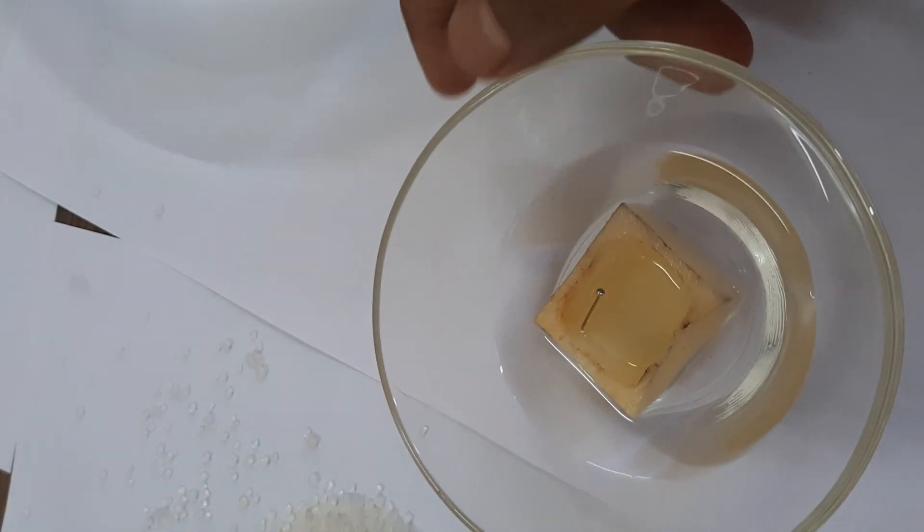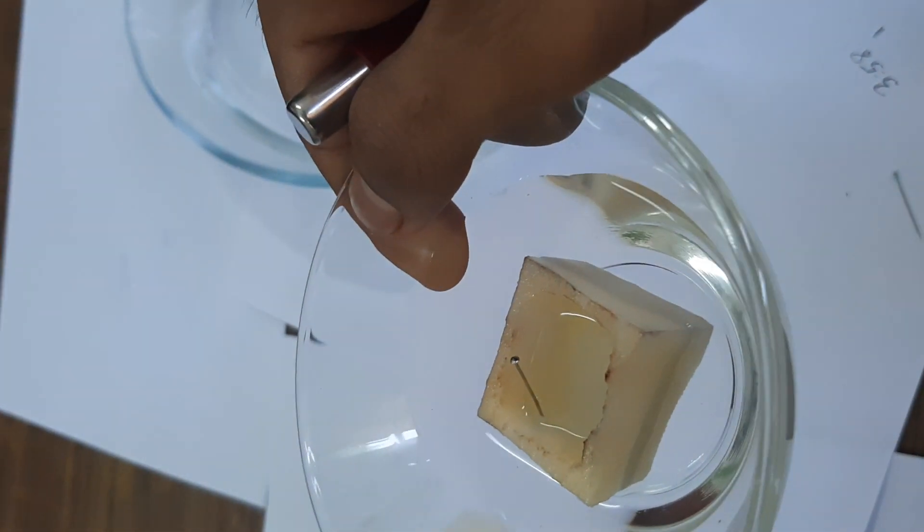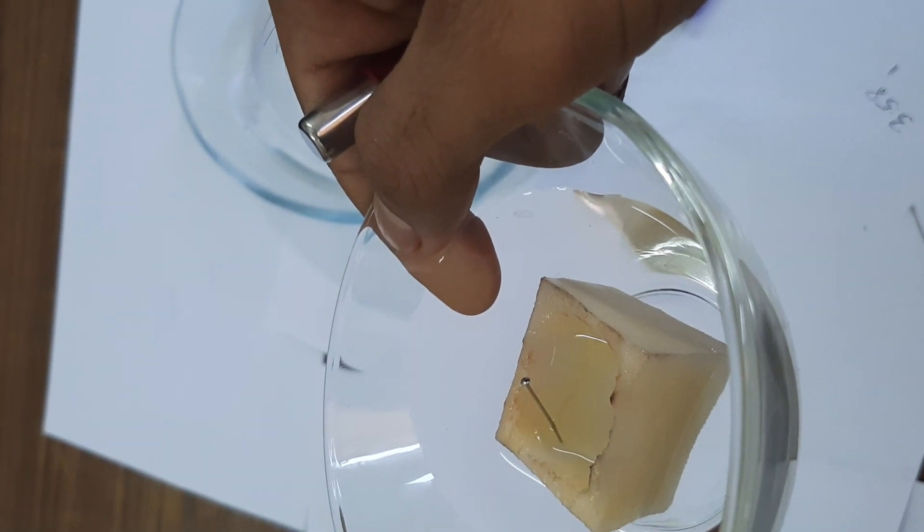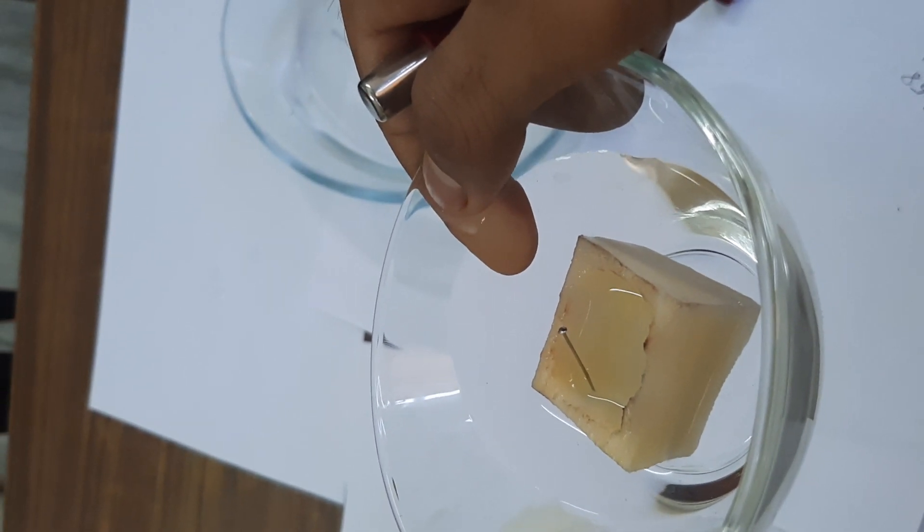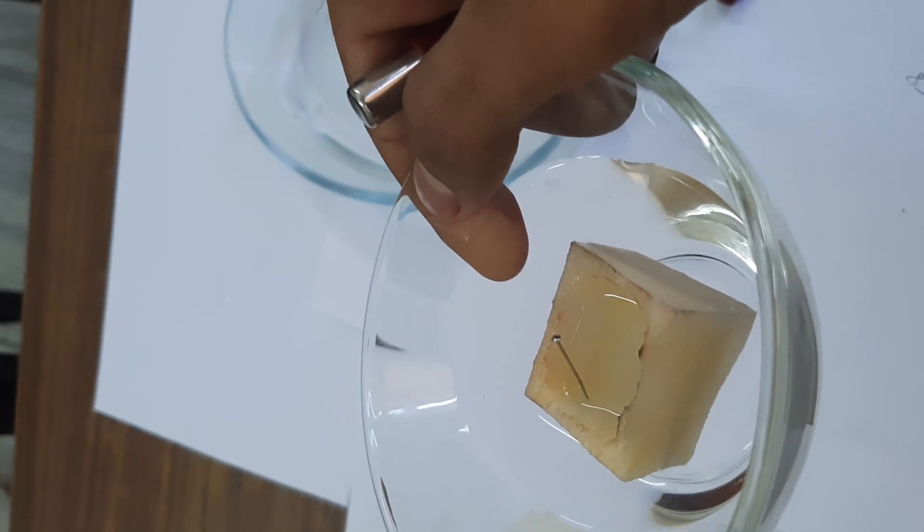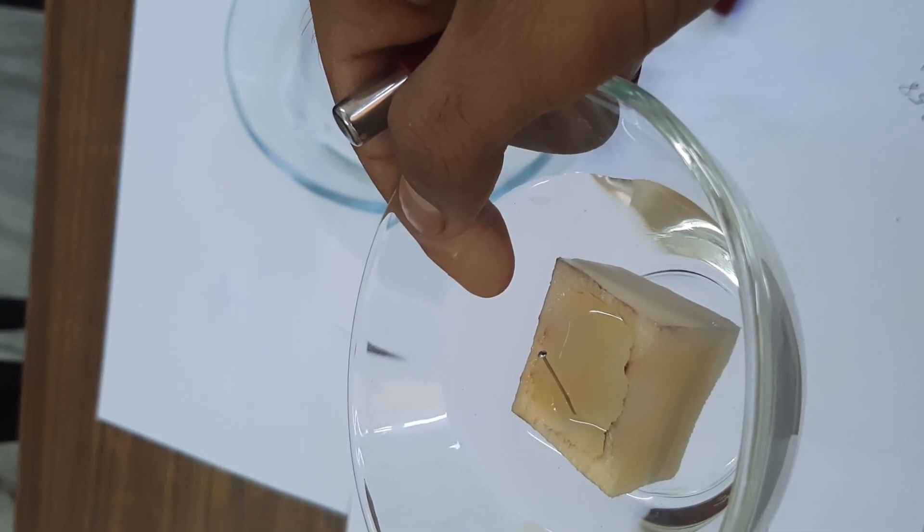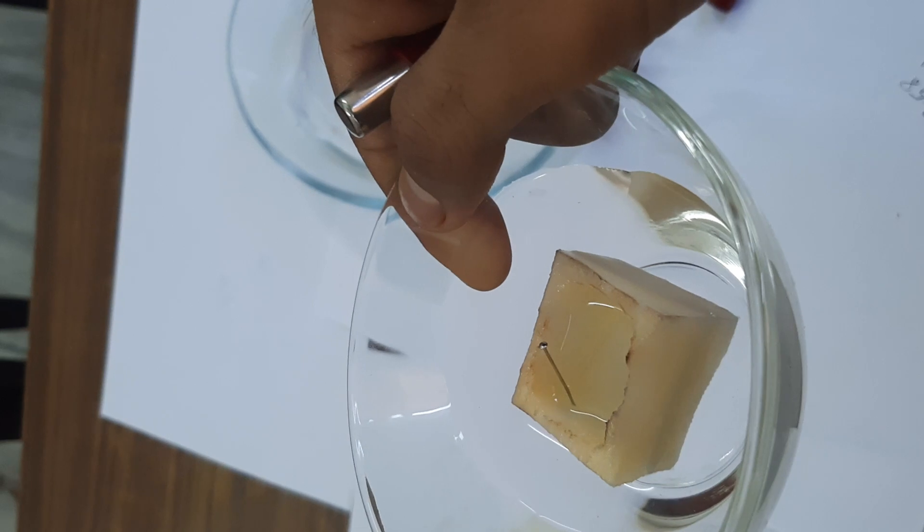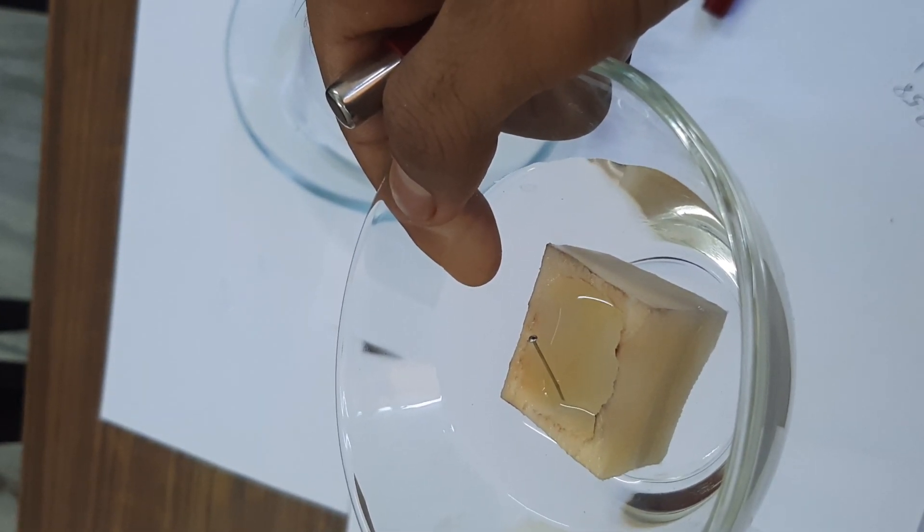Almost after half an hour, now you can observe the pin has completely dipped into the solution. What happened is that the water from outside having less solute moved into the potato having less water. This shows endosmosis and demonstrates how water from its higher concentration moved into the lower concentration.